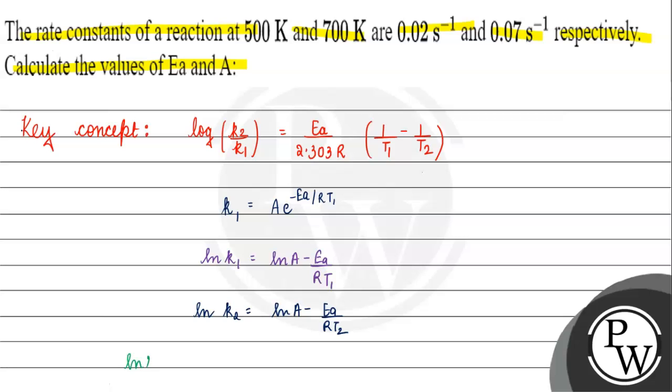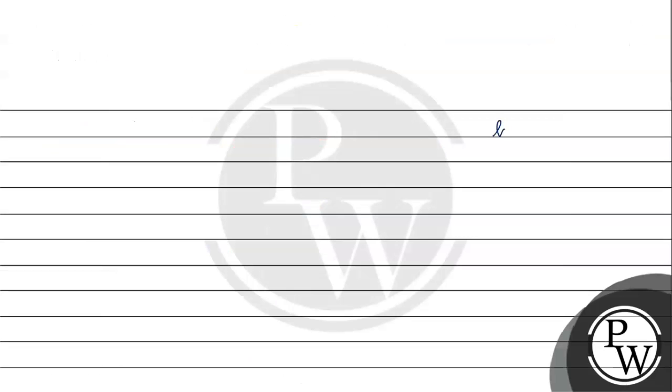Now, in the next you can subtract, ln K1 minus ln K2 comes to, ln A cancels, and we have minus Ea by RT1 plus Ea by RT2. Then ln's property is, ln x minus ln y, we can write as ln x by y.